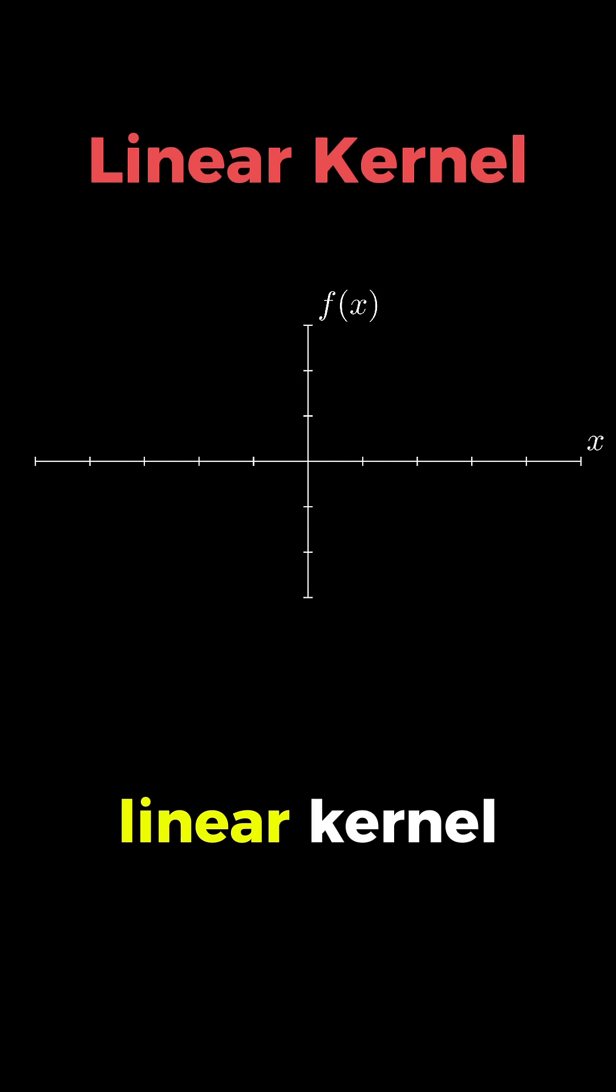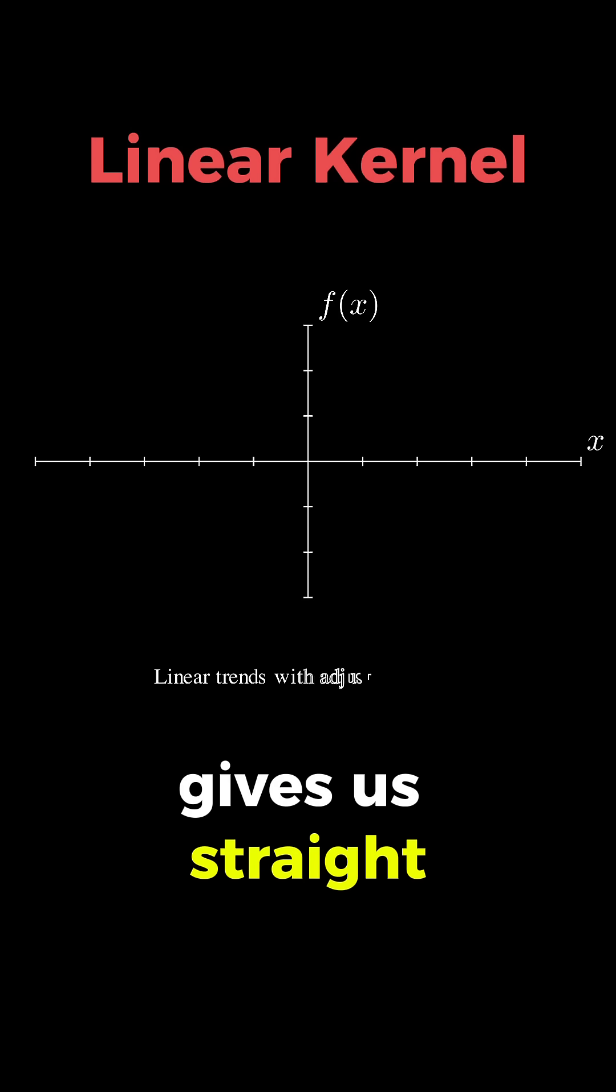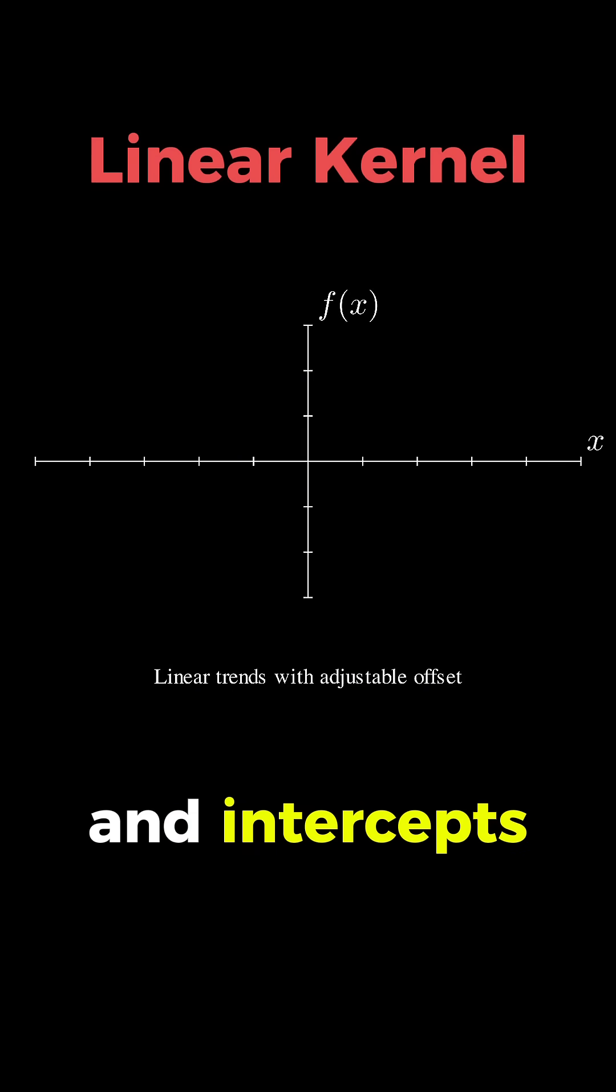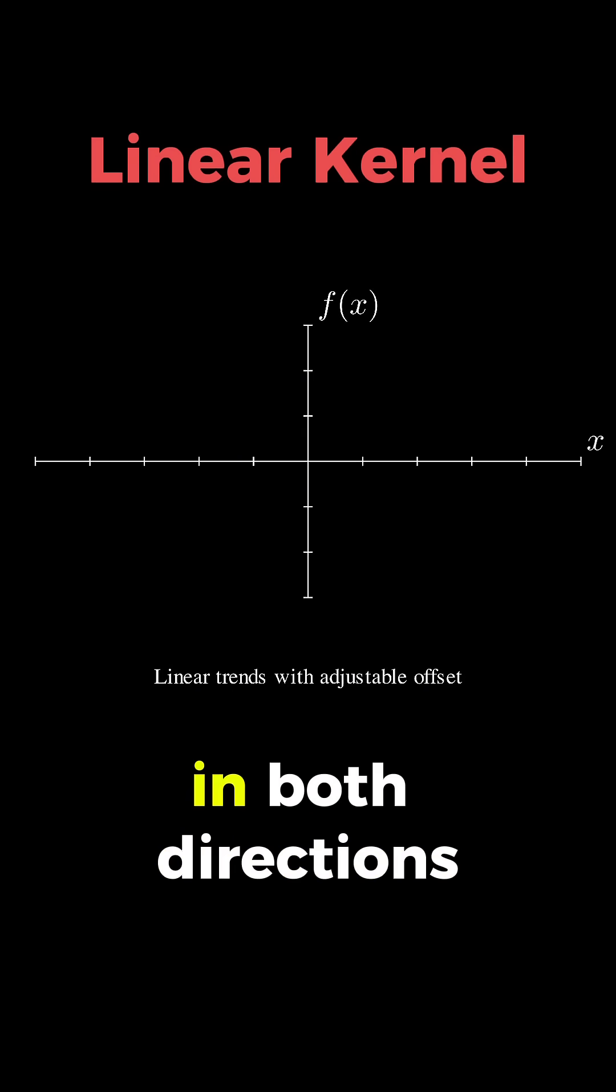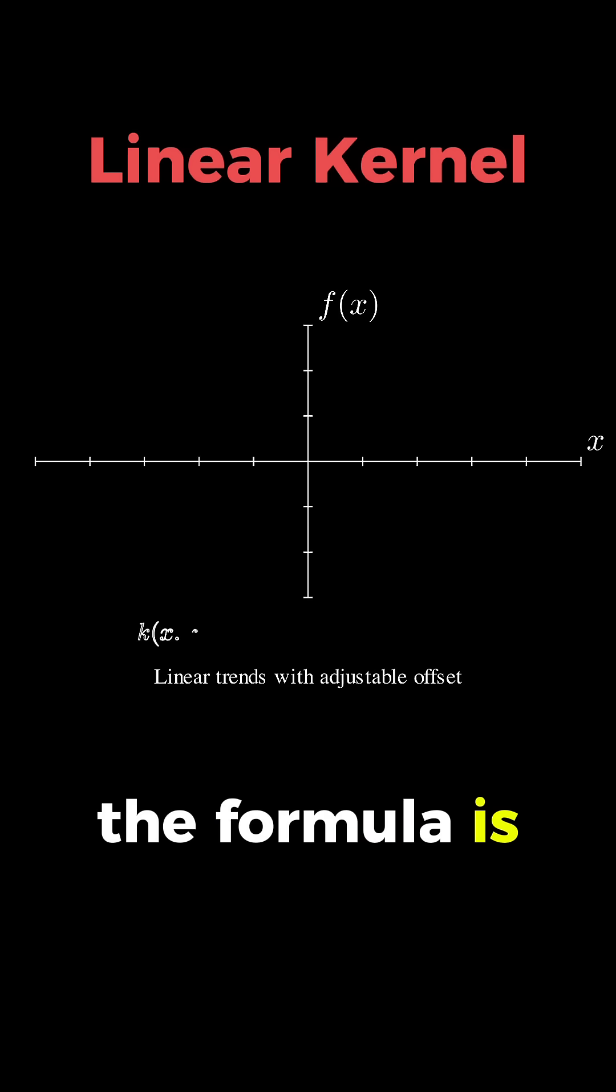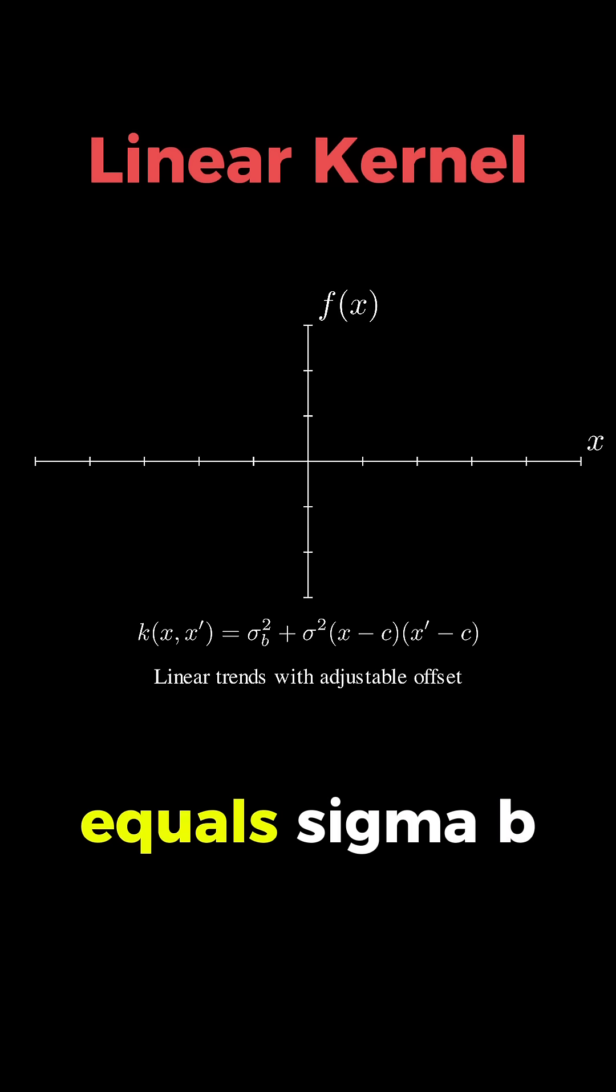Finally, we have the linear kernel, and as you can see, this simple kernel gives us straight lines with varying slopes and intercepts that extend infinitely in both directions. The formula is k of x and x' equals sigma b squared plus sigma squared times x minus c times x' minus c.